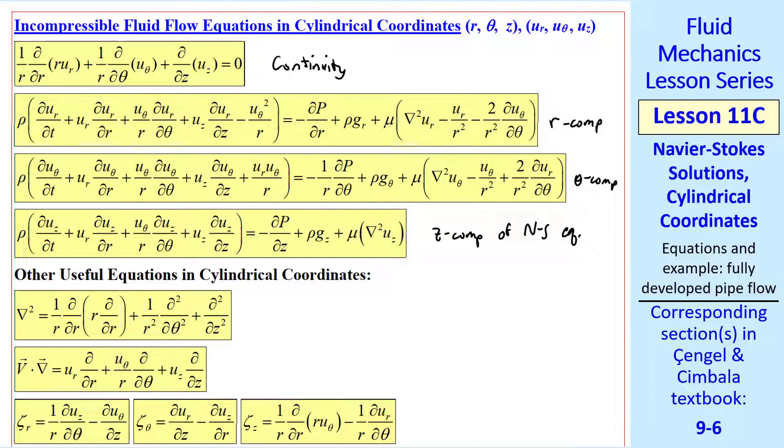Now let's do a very similar thing with cylindrical coordinates. We'll use r theta z as our coordinate system, and ur uθ uz as the corresponding velocity components. Again, we have continuity, the r component of the Navier-Stokes equation, the theta component, and the z component. Notice that we get some extra terms, like uθ² over r, ur uθ over r, uθ over r², etc. Where do these terms come from? Well, at some point in the flow, the unit vector in the radial direction is er, and the unit vector in the theta direction is eθ. But if you change theta, eθ changes direction, and so does er.